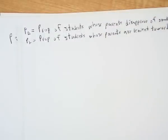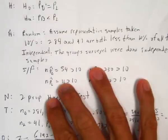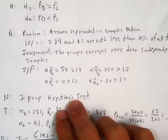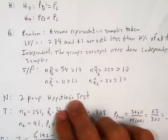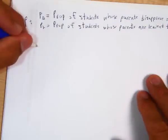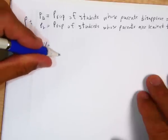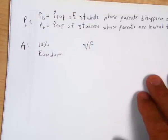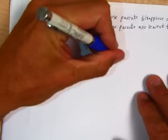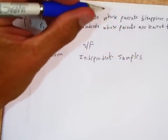Now what we've got to do is we have to check the assumptions and conditions. So I'm not going to go back and redo all that because we've already done it. But again, we would have to do the random condition, the 10% condition, the independent samples condition, and the success failure condition. Well, we already did all that. So we're not going to do that again.